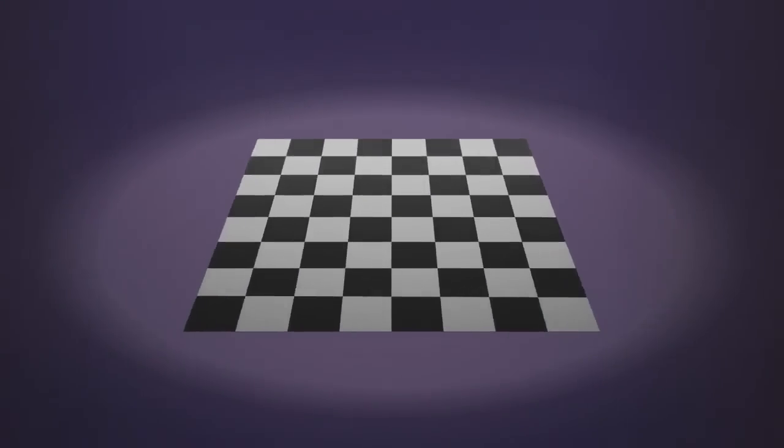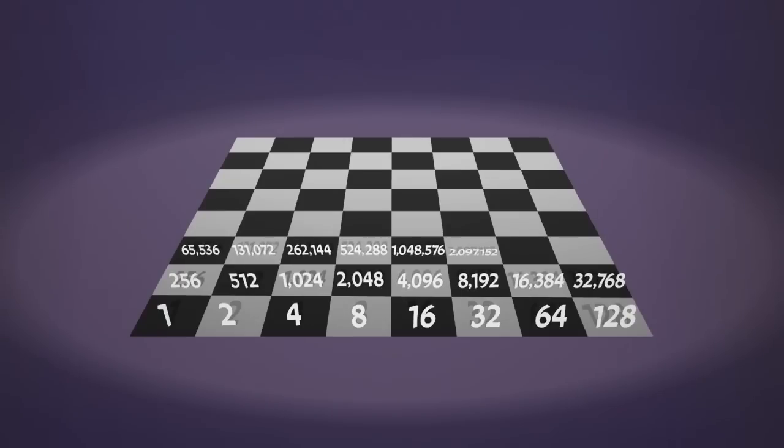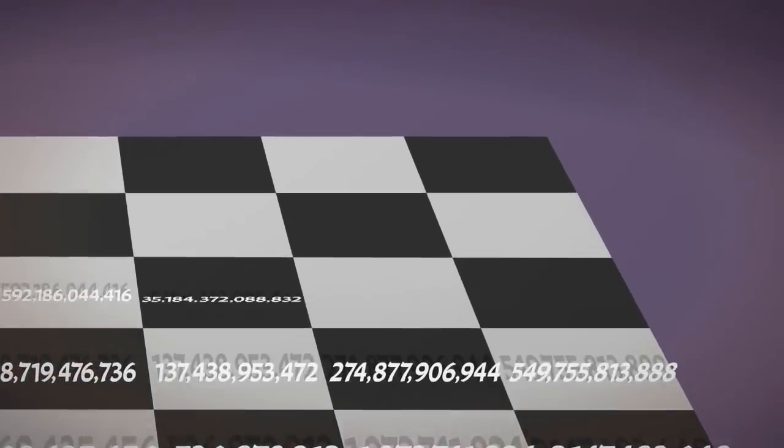If we place a single grain of rice on the first square of a chessboard, double this and place two grains on the second, double again and place four on the third, double again and place eight on the fourth and continue this way, putting on each square twice the number of grains than were on the previous one. By the time we reach the final square, we need an astronomical number of grains.